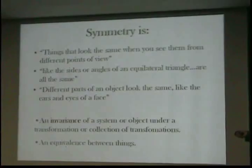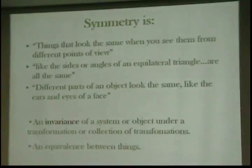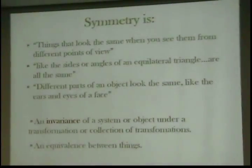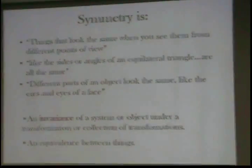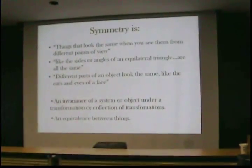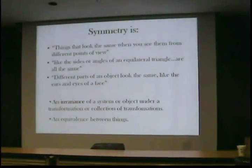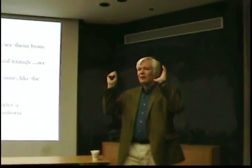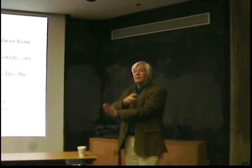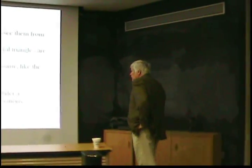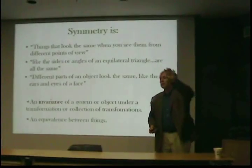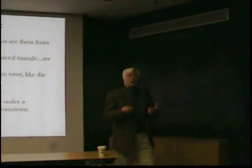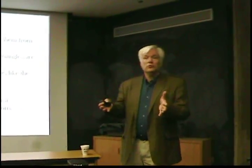Symmetries involve — if we ask for a definition — things that look the same when you see them from different points of view. Like the sides or angles of an equilateral triangle, they're all the same. Different parts of an object look the same, like eyes and ears of a face. More precisely, it is an invariance — an unchanging quality of a system or object under a transformation or collection of transformations. The object was the Taj Mahal: it didn't change when we performed the transformation of reflection about the axis. What really underlies all of this is the most fundamental thing in mathematics — an equal sign. Taj Mahal before the symmetry operation equals Taj Mahal after the symmetry operation.